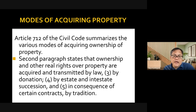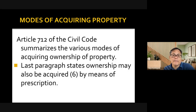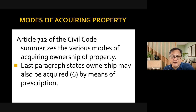Estate succession occurs by virtue of a last will and testament. Donation is self-explanatory. The last paragraph of Article 712 states that ownership may also be acquired by means of prescription — for example, if you have been over the property for several years, it creates a certain right for you to claim ownership by lapse of time. That is what prescription means.